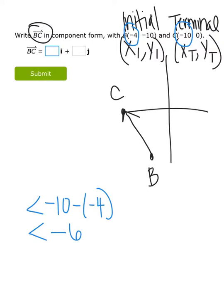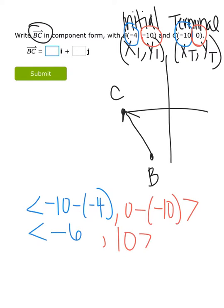Moving on to the vertical change, subtract terminal y minus initial y: 0 minus negative 10 is really 0 plus 10, giving a vertical change of positive 10. Don't get confused by the i and j notation — those variables just represent the horizontal and vertical change. You're still typing the same answers: negative 6 goes with i for horizontal, and 10 is the answer for j, the vertical change.